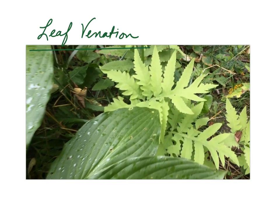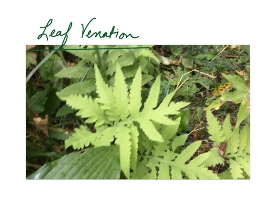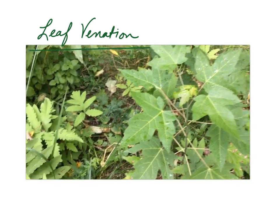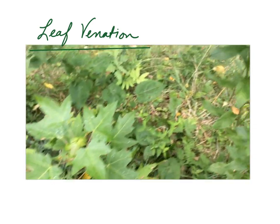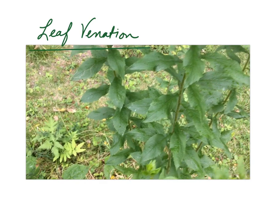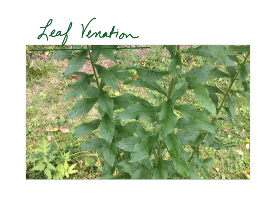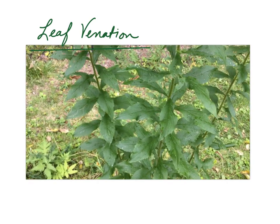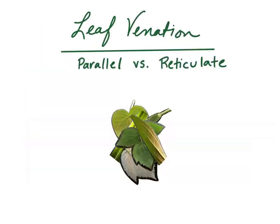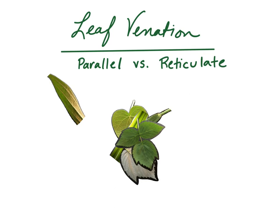Go outside and look at all the different leaves, each one having its own pattern of veins. This is leaf venation. Folks who study leaf venation have sorted all of the possible patterns of veins into two main groups: parallel and reticulate.